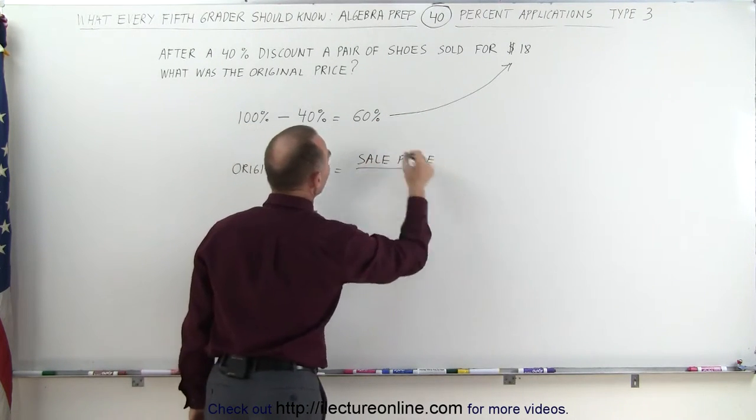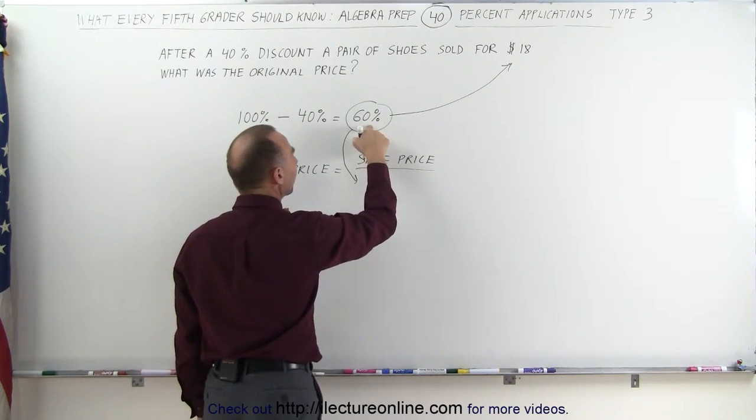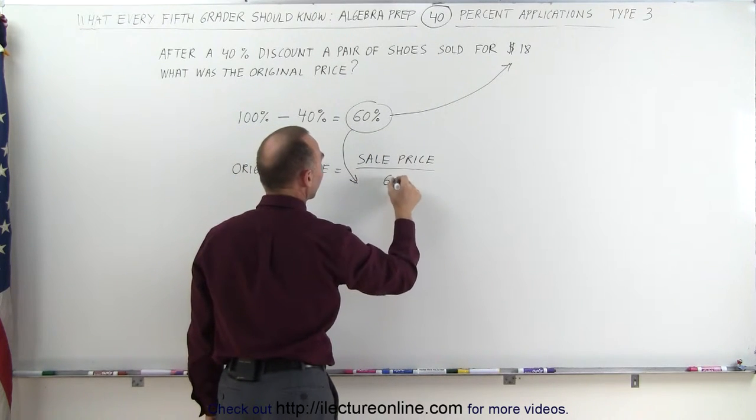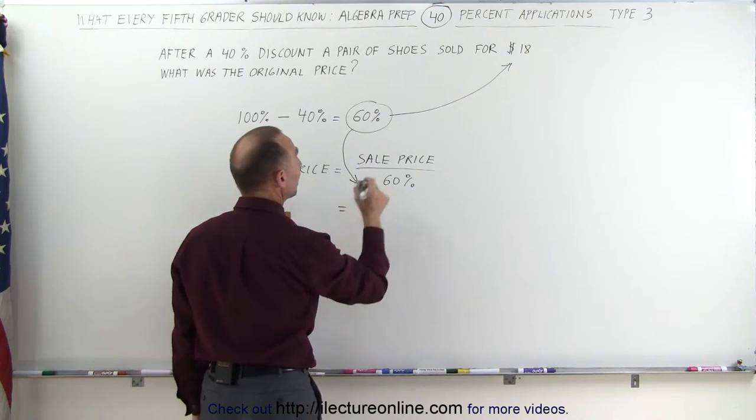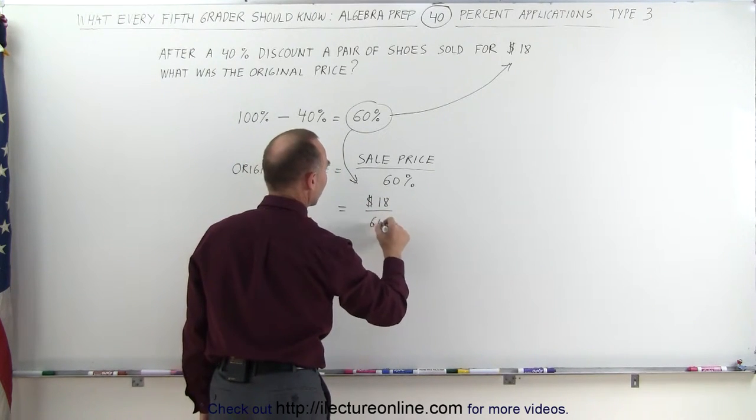and divide it by the 60%, which means 60% is the sale price value of the original price. So we divide the sale price by 60%. That means we take the $18 divided by 60%.